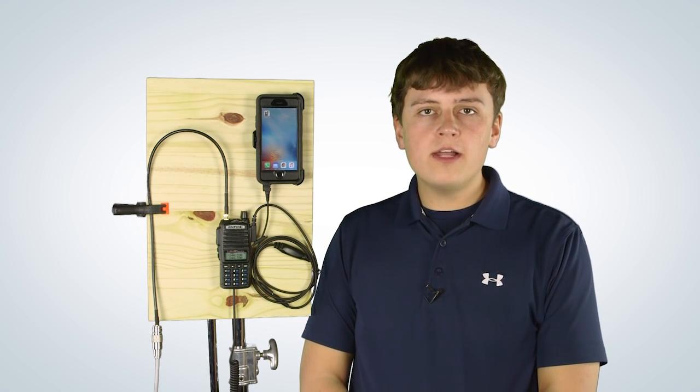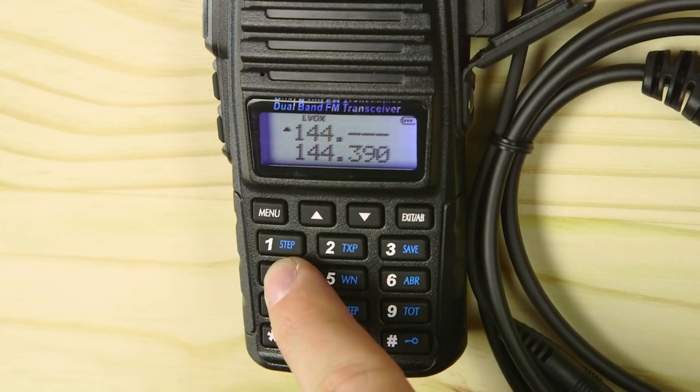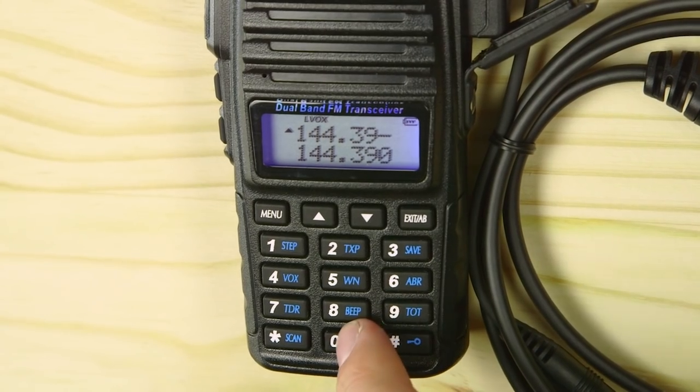We are using a UV82 HP. Ours is connected to an external antenna for this demonstration. In North America, the APRS frequency is commonly 144.39 MHz.